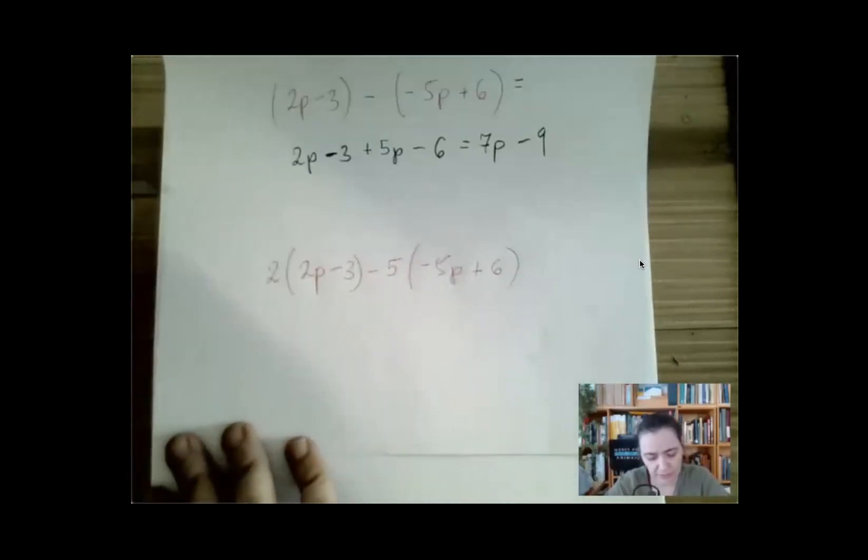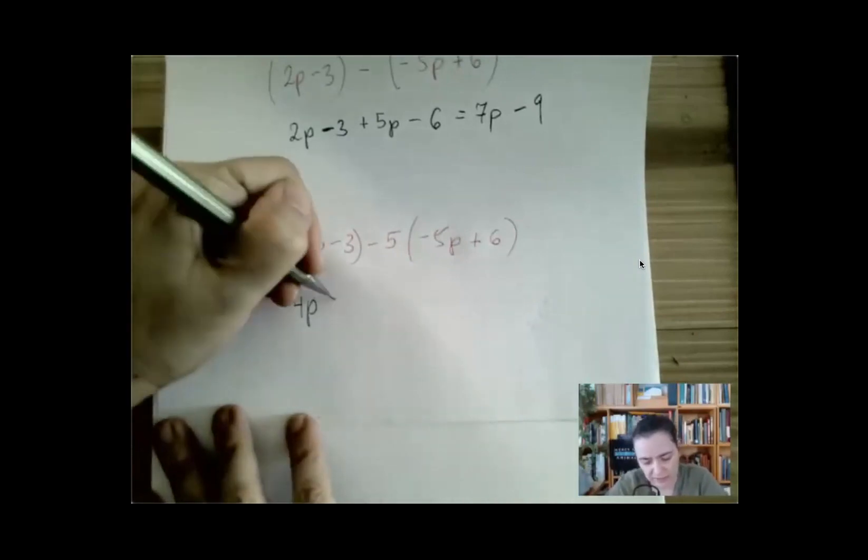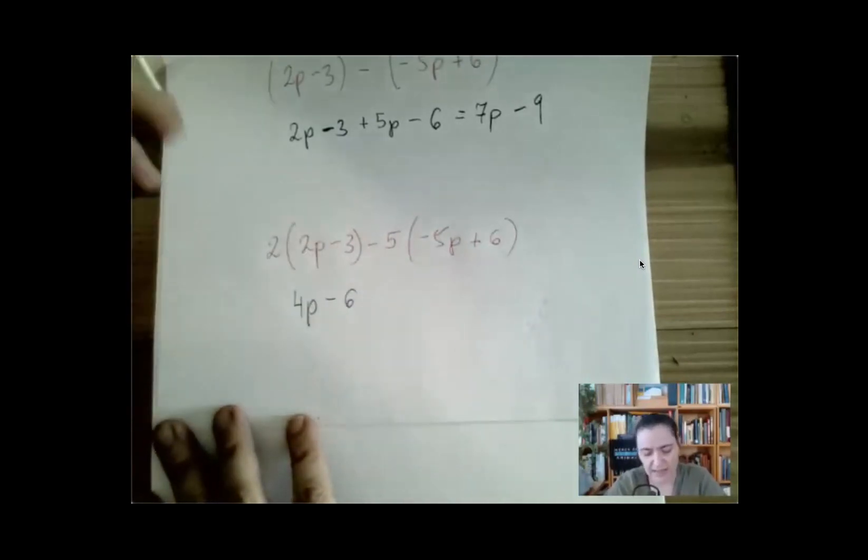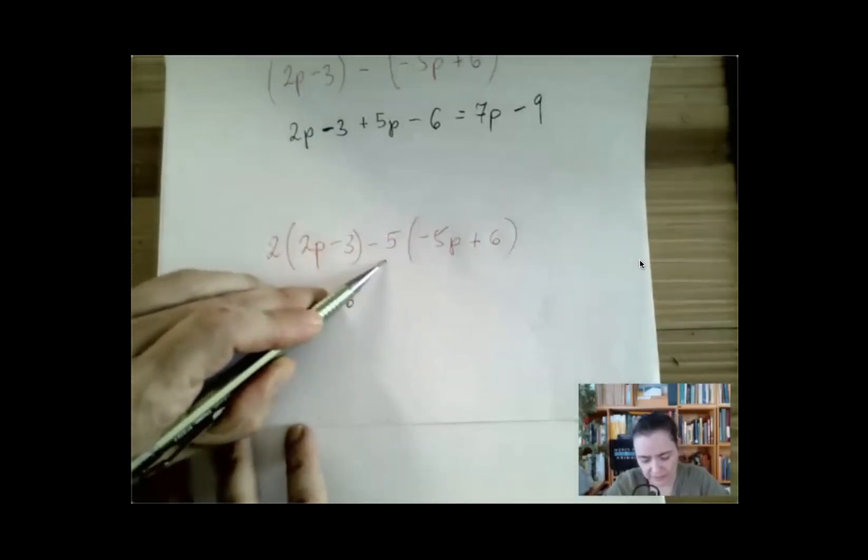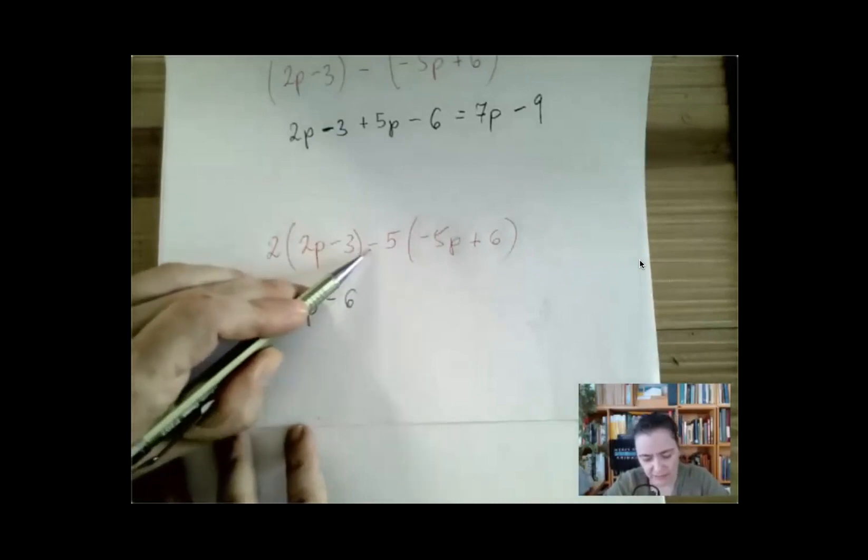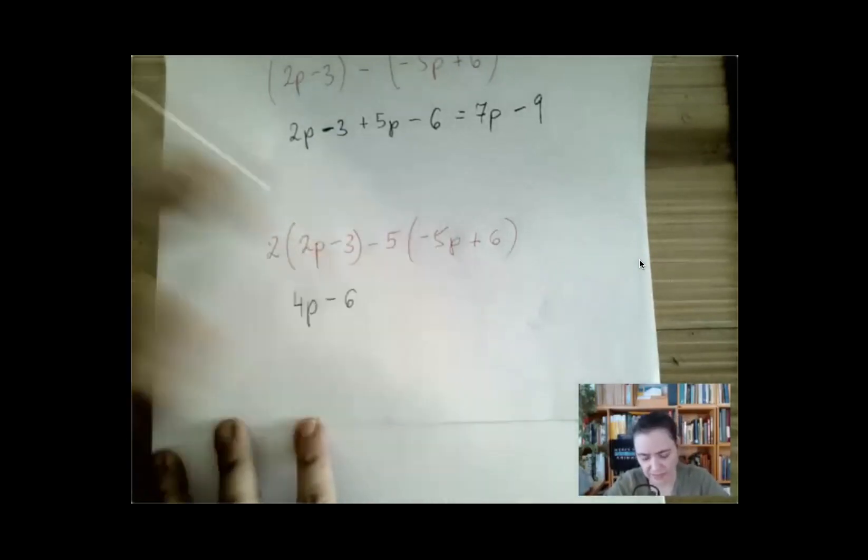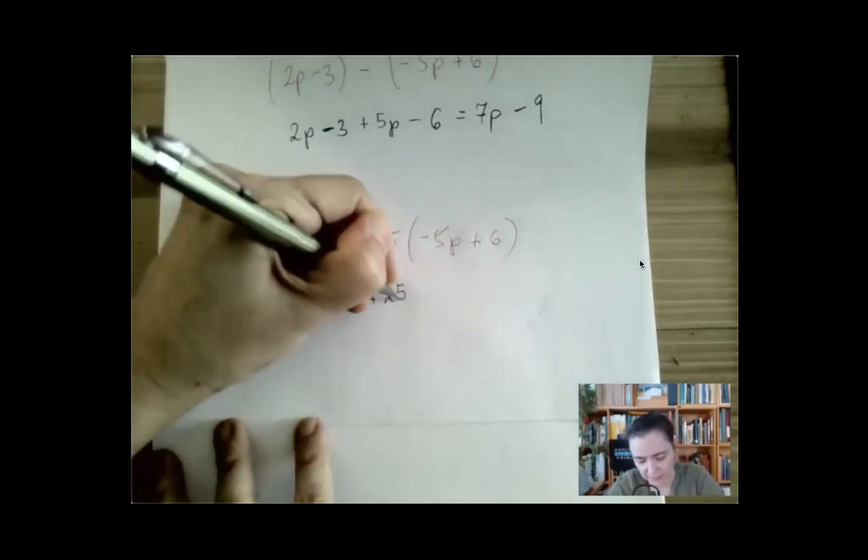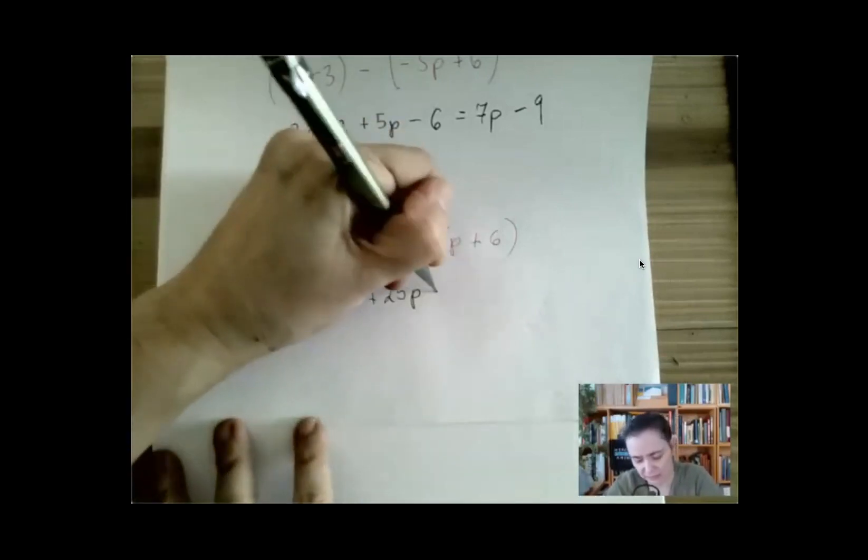So we distribute for the first 2. 2 times 2p is 4p, 2 times negative 3 is negative 6. And now it's going to be addition or subtraction, so things will not turn into multiplications. And we can just sort of mentally shunt this negative with the 5 and distribute negative 5. Negative 5 times negative 5p is plus 25p, and negative 5 times plus 6 is negative 30.